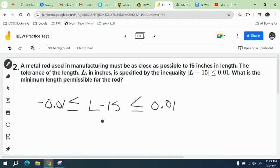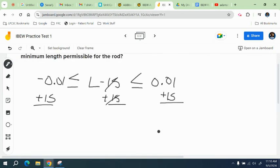And you just get L by itself. So you're going to add 15 to both sides. Actually, all three sides is what I should say. And so when you do that, this cancels with this. And so we're left with L. And this is less than or equal to, less than or equal to. On this side, you get 15.01. If you subtract 0.01 from 15, you actually get 14.99.